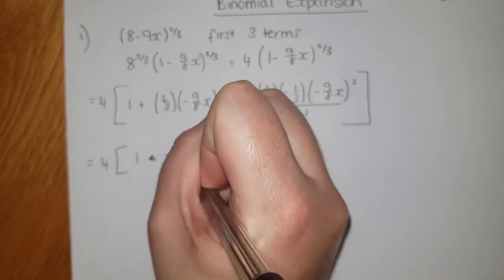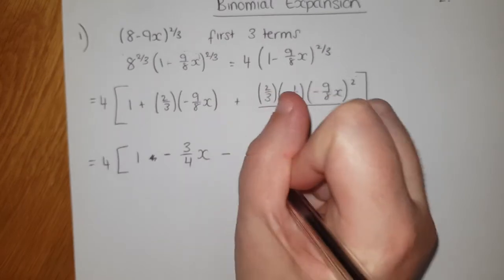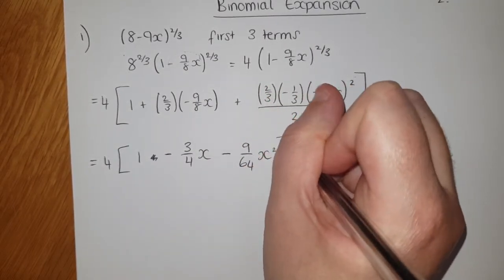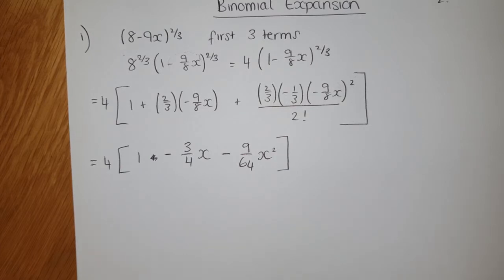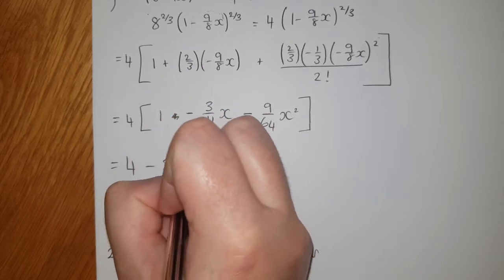And then on the next one we're gonna get -9/64 times x². Okay, all we're going to do is then multiply 3 by 4. You get 4 - 3x - 9/16 x². Okay, and that's it, that's our three terms.